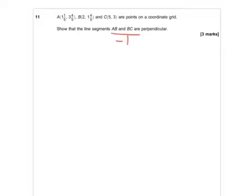So we've got to find the gradient of AB, which is the rise over the run. So we're going to do one and four-fifths minus three and four-fifths. So whilst the numbers look horrible, they're not actually too bad. Two minus one and a fifth.